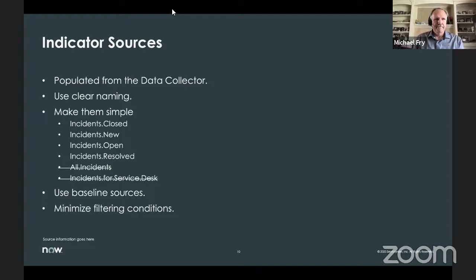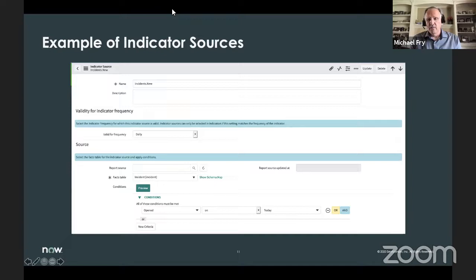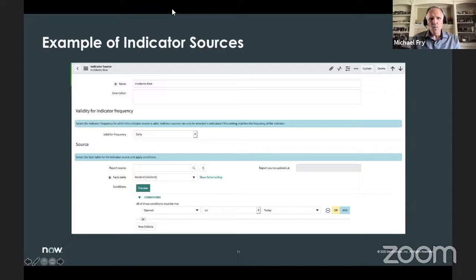Here's an example of an indicator source — very basic. It has a name; use clear, simple naming. It has a frequency — this one is daily. We have daily, weekly, biweekly, monthly, yearly, and fiscal year frequencies. The most common is daily. The facts table is incidents, with a condition of opened on today. This will capture all incidents opened today. When the data collectors run, they populate this indicator source table with all incidents opened today.